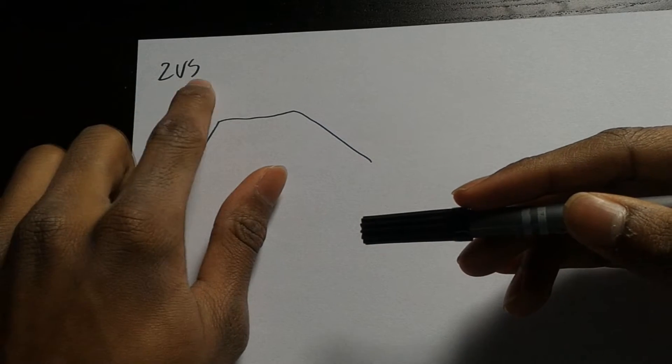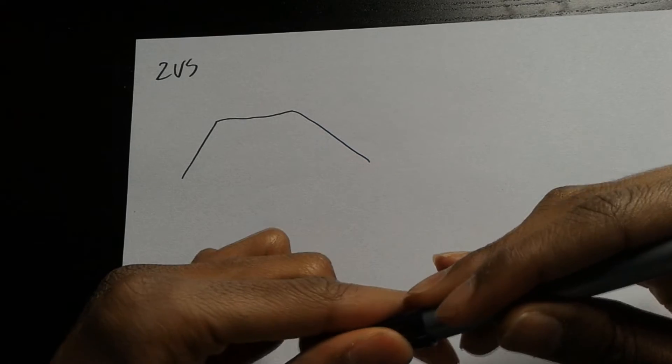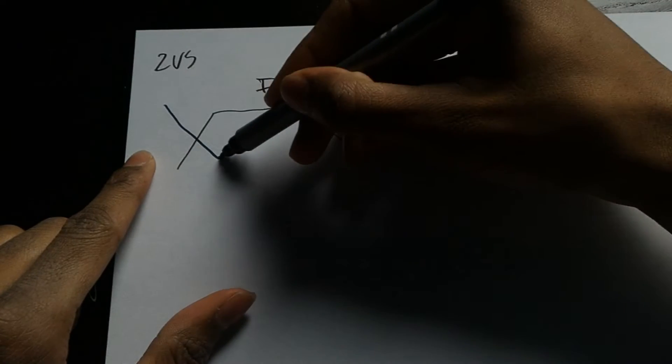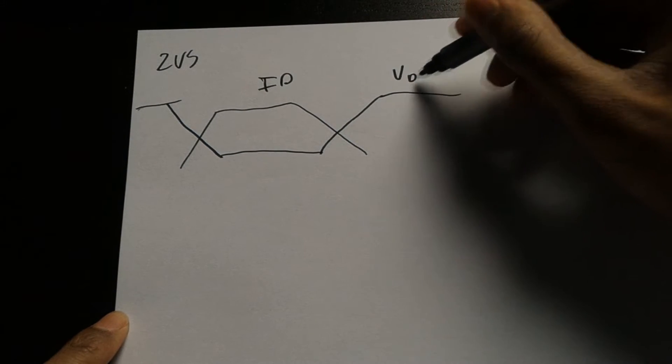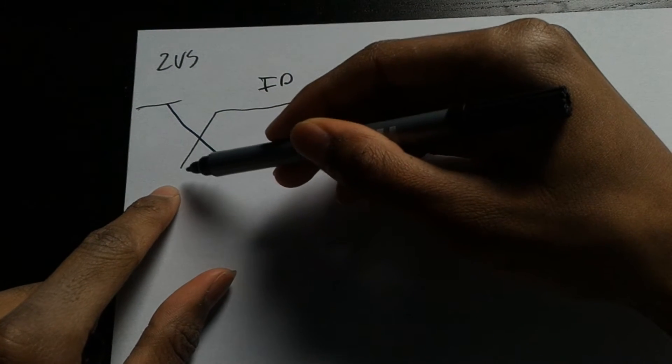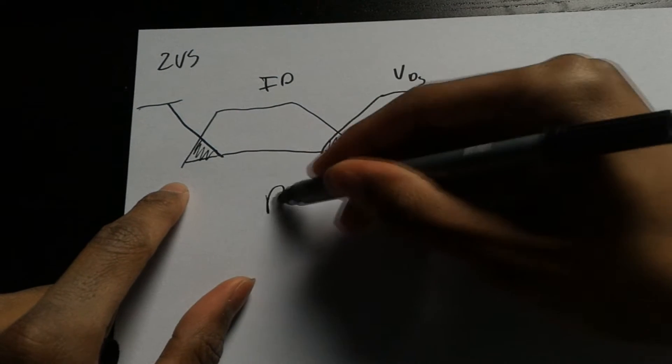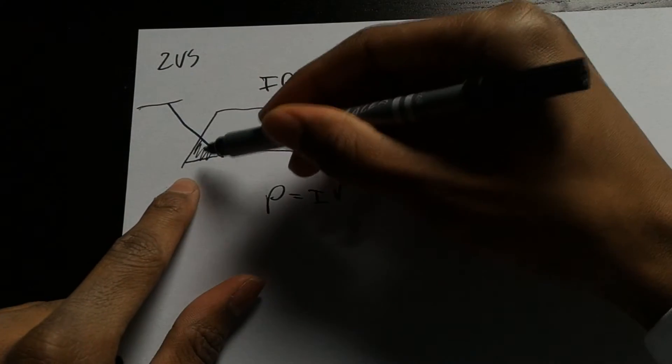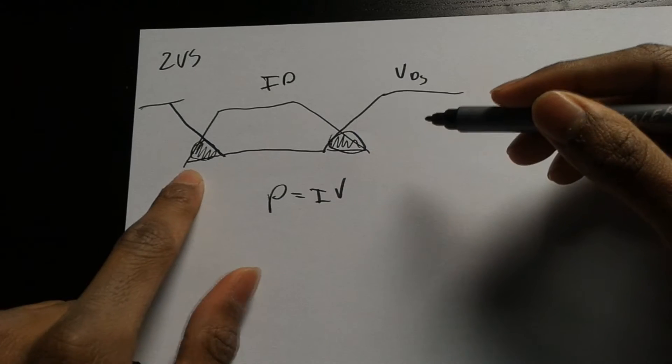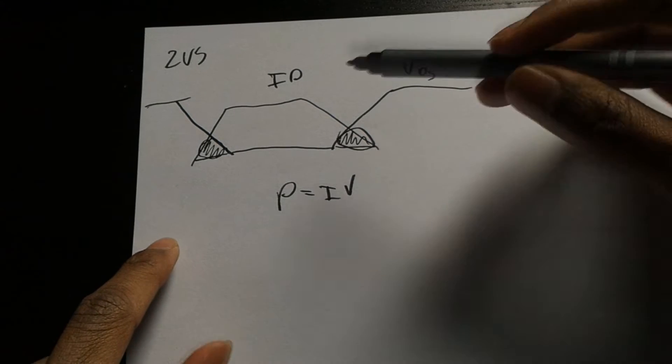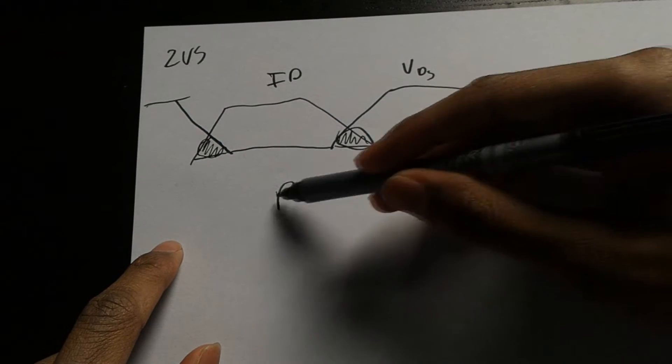Before we understand what zero voltage switching is, we must understand what hard switching is. For example, this must represent the current on the drain of a MOSFET, and this represents the drain-to-source voltages. As you can see, when the MOSFET turns off and when it turns on, we have I times V, which is power. This means we have power losses in these areas, which can lead to very big efficiency losses. For example, when we have high currents, which we will have, and voltages, which will create lots of power, and therefore lots of heat.